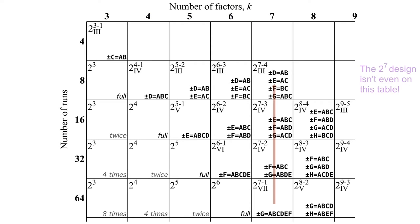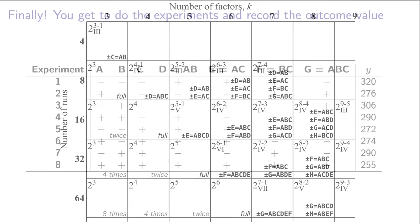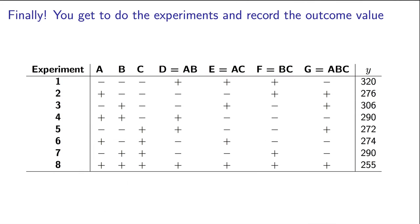Remember, instead of doing 2 to the 7, which equals 128 experiments, we've done 8. There's going to be a steep price to pay for this reduction in work. Now let's go look at the numbers from the outcome variable and how to continue on with the analysis. And as you'll see, and this is very typical, the analysis goes much quicker than the planning.